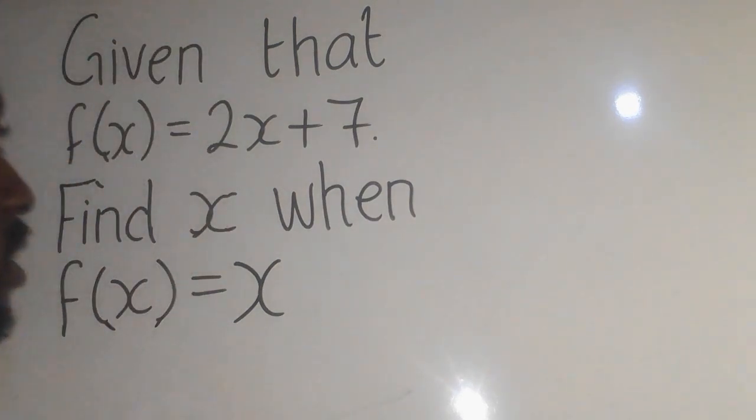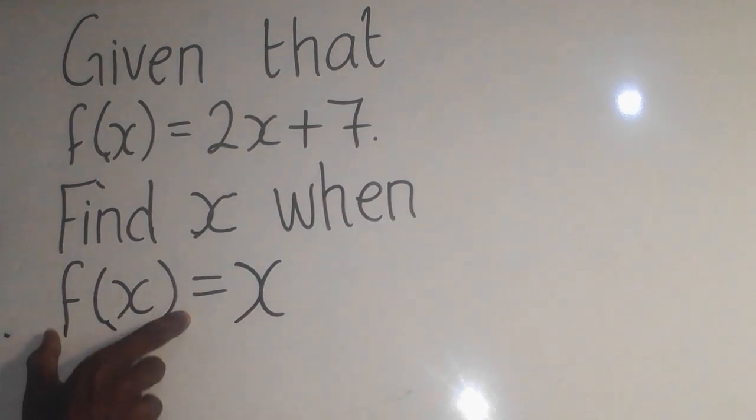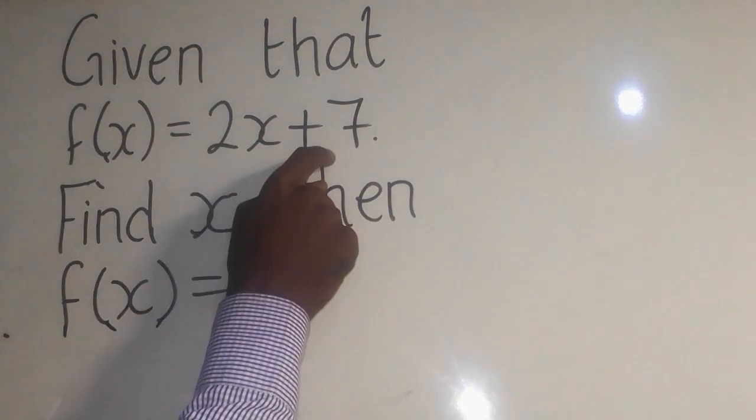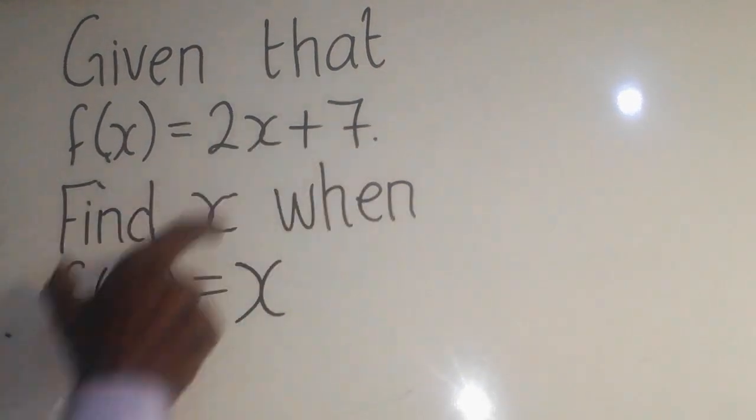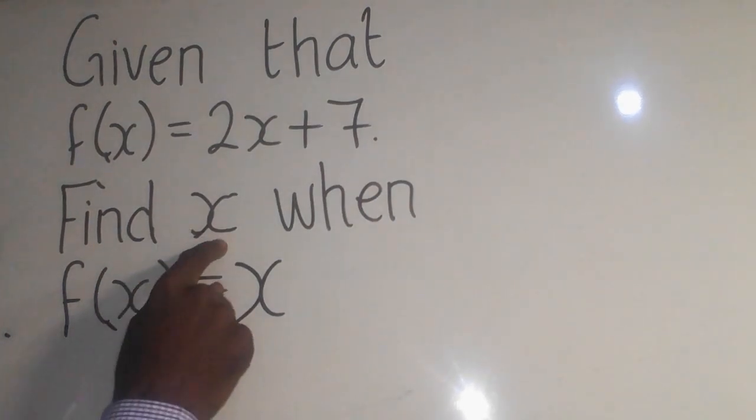Now, you need to understand that when they say f(x) is equal to x, it simply means when there is f(x), get this equation. Because I said f(x) is equal to this equation, so you get this equation and put it here. That's the actual meaning here, because they want us to find x.